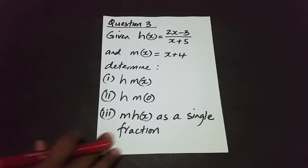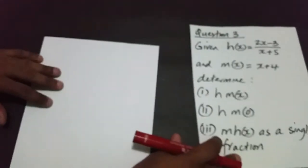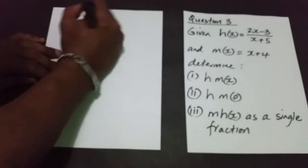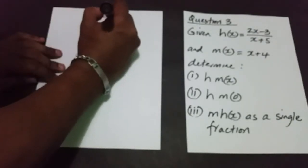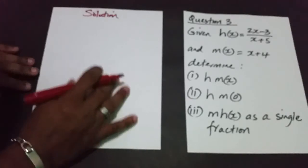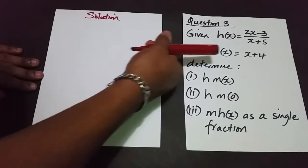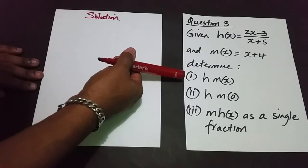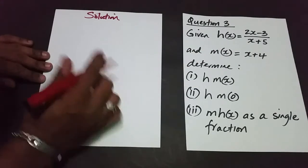So we're going to get straight into this question as well. The first thing we need to do is to read what is being asked for. It says determine part one which says h of m of x.